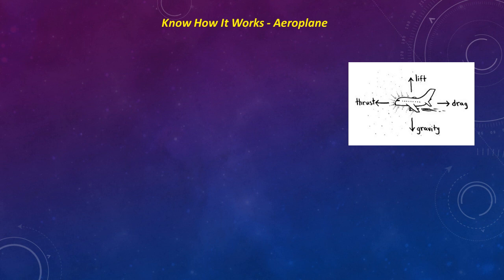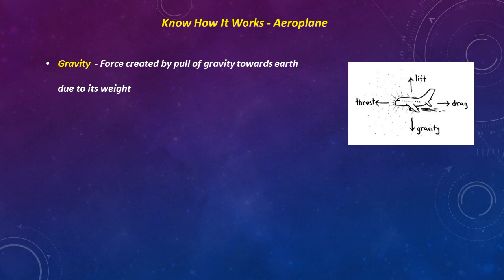These four forces are the basic principle of operation of an aeroplane. Let us see them one by one. The first is gravity — a force created by the weight of the aeroplane that pulls it downward.